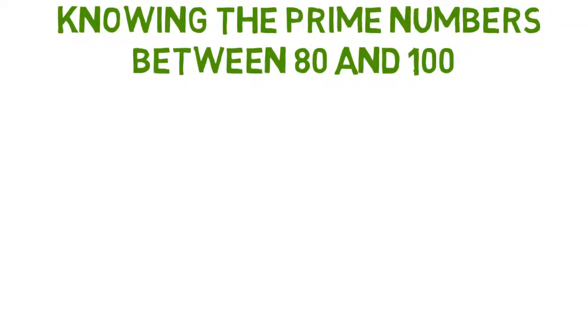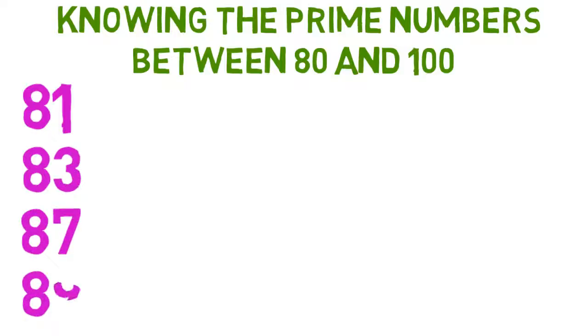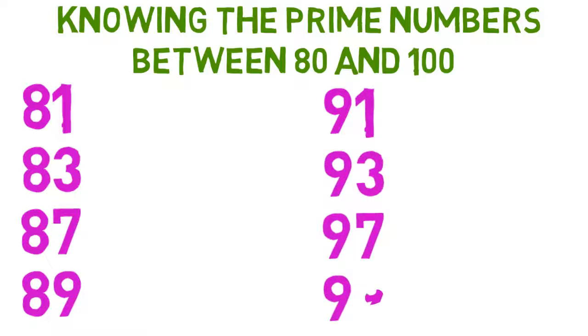you need to check the eight odd numbers that are not divisible by five. These are 81, 83, 87, 89, 91, 93, 97, and 99.